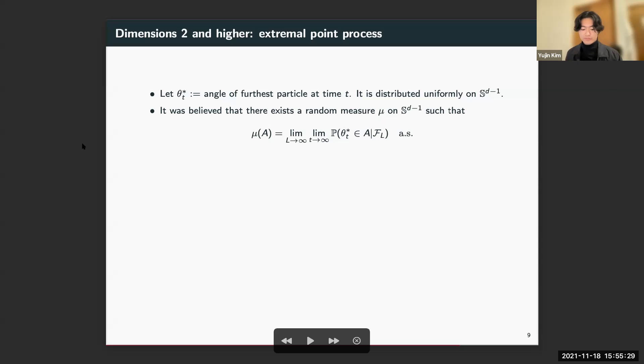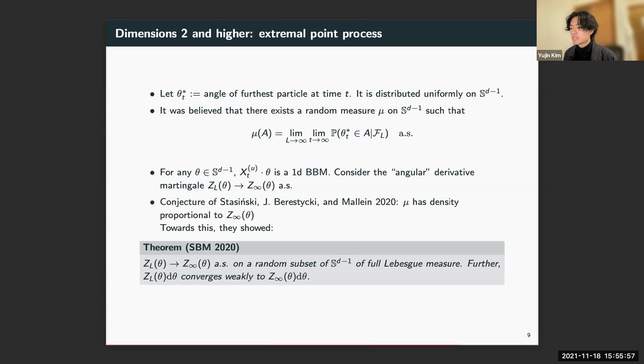The question is: do we have some limiting random measure, and what does it look like? How does it relate to the derivative martingale? Now, for any θ in the sphere, the projection of our BBM onto θ is just going to be one-dimensional BBM, of course. So there's an associated angular derivative martingale with this direction θ. It'll be constructed as the limit of some functional Z_ℓ(θ), and we'll call it Z_∞(θ). For each θ, we have an almost sure limit. The conjecture of Stuczynski, Berestycki, and Mallein in 2020 is that μ should have a density proportional to Z_∞(θ).